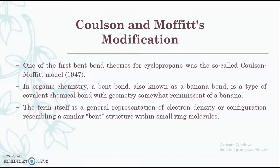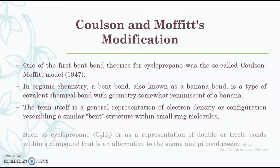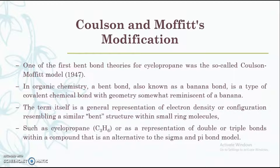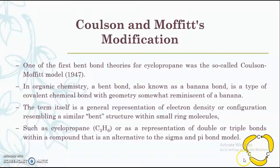The term itself is a general representation of electron density or configuration resembling a bent structure in small ring molecules, such as cyclopropane, or as an alternative representation of double or triple bonds within a compound, alternative to the sigma and pi bond model. In cyclopropane, to maintain the 60-degree angle, the p orbitals of the carbon atoms come inward to get maximum overlapping, and due to this these bonds have a bent structure — that is why these types of bonds are known as bent bonds.